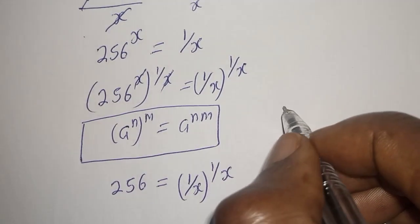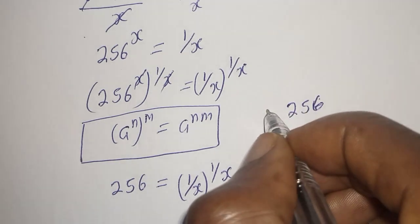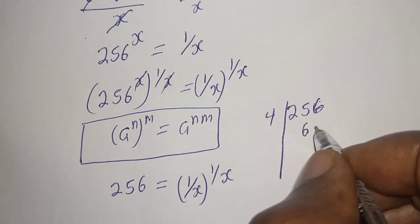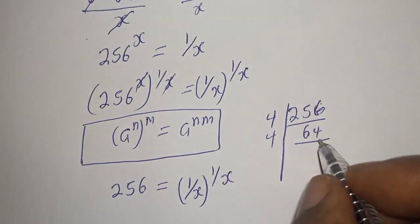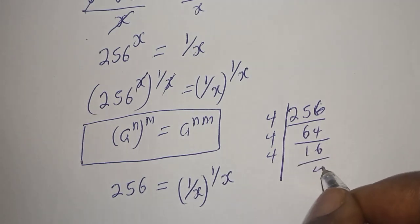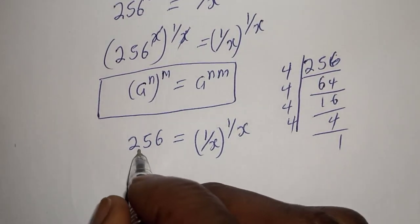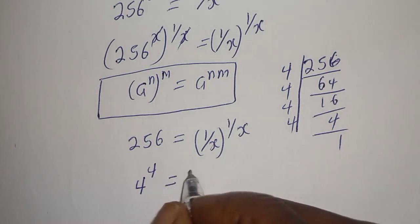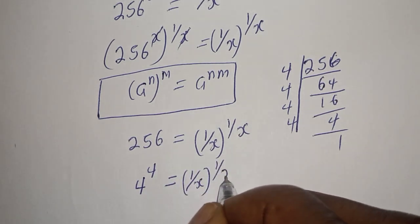Now let's consider 256. We can factor 256 as 4 goes into 256 giving 64, then 4 into 64 is 16, then 4 into 16 is 4, then 4 into 4 is 1. So 256 is 4 raised to the power of 4. Therefore, 4 raised to the power of 4 is equal to 1 over S, raised to the power of 1 over S.